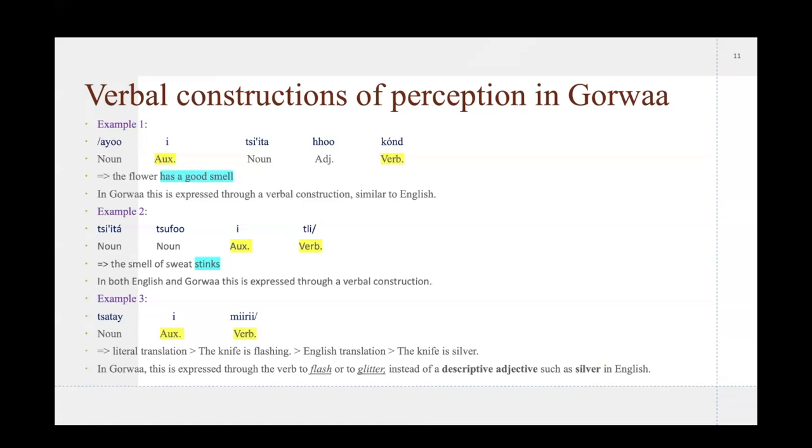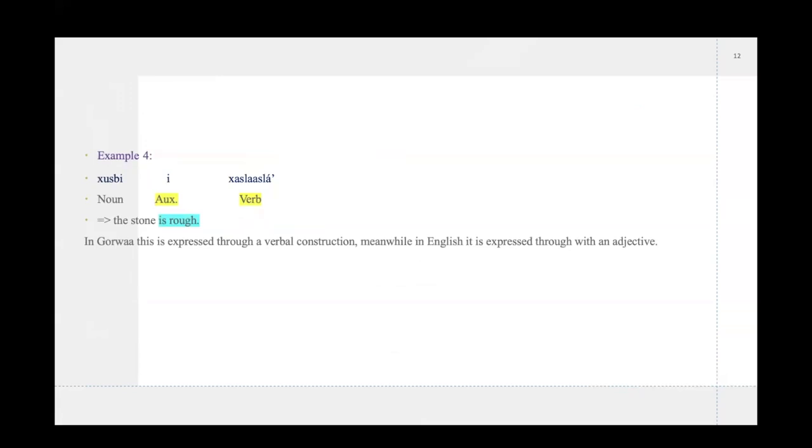And I had actually had a few other examples where I had asked for, like, the woman's jewelry is silver, and I don't know, I had multiple examples where I ended up with the same miriya, which means to flash. So, yeah, that was an interesting little finding. But also, I had gotten this miriya for, like, blinding and the water sparkles and things like that. So, this, it has multiple uses, but in this case, I just found that it was interesting that it was used to also express silver. Example four we have is khuspi y khathlazla. The stone is rough. So, in Gorwaa, it's expressed through a verbal construction. So, to be rough is a verb in Gorwaa, and contrary to English, where it is an adjective.